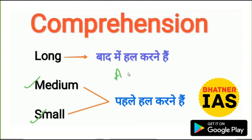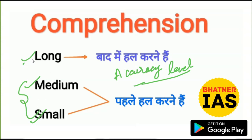The accuracy level is much more in this approach — focusing on medium and small first — rather than starting with long comprehension. As I told you, the long comprehension takes a lot of time. If we get stuck at one point, it can easily take five to seven minutes, and we have to pay for that because the whole matter is of time. We have to manage time for this examination.